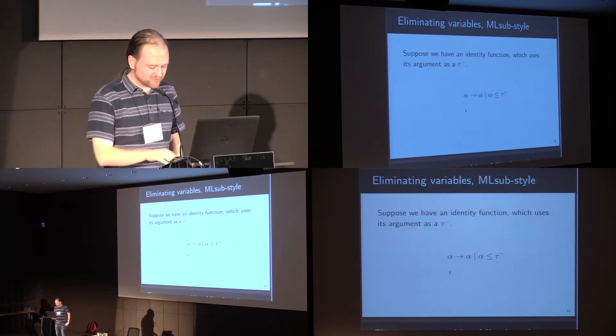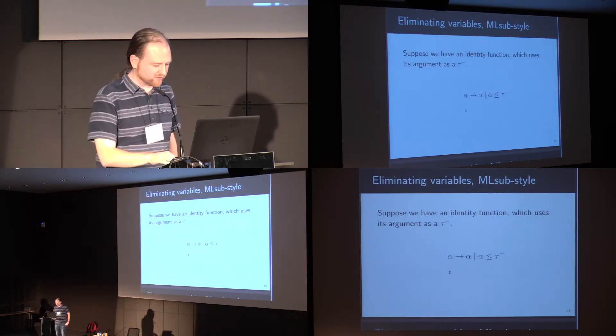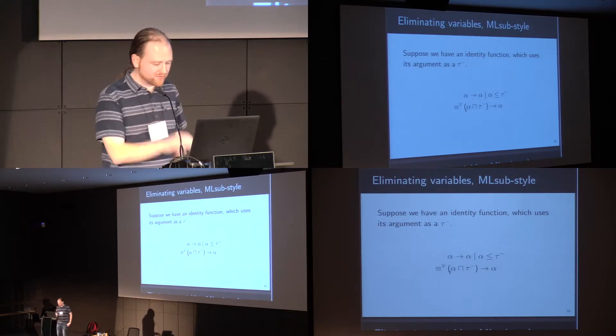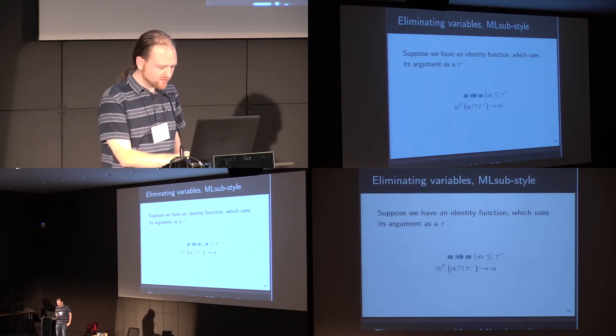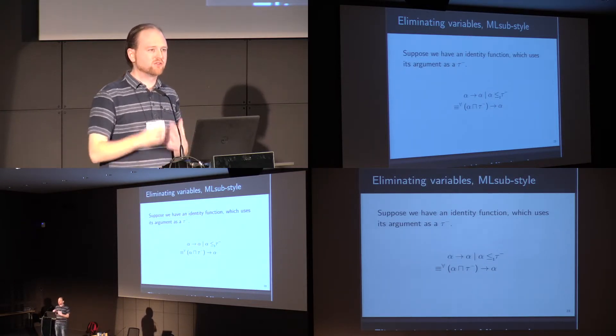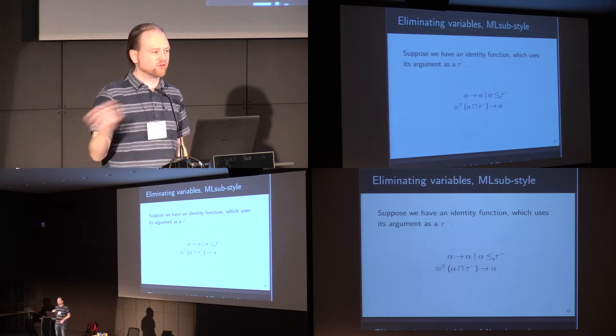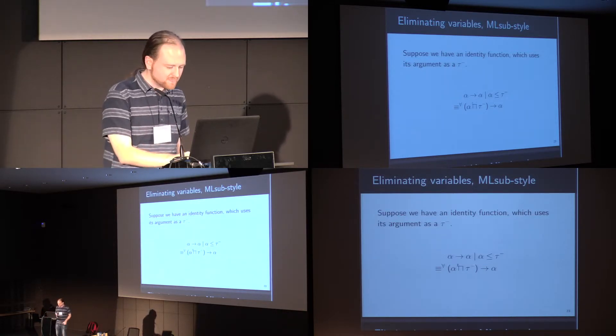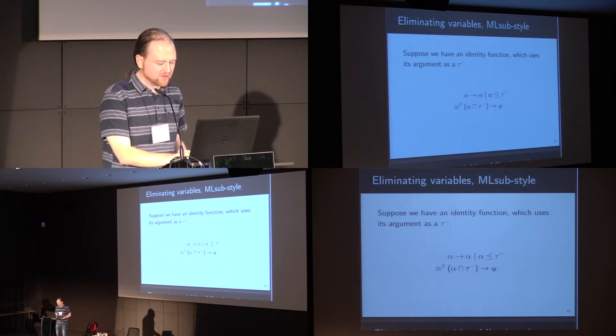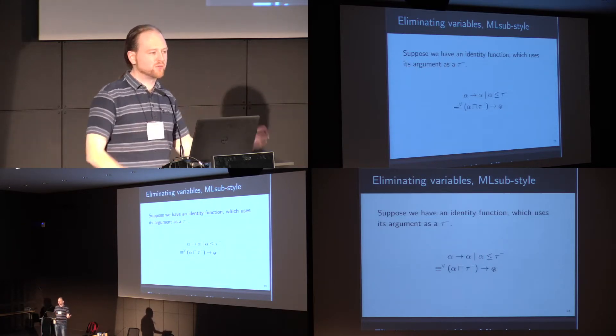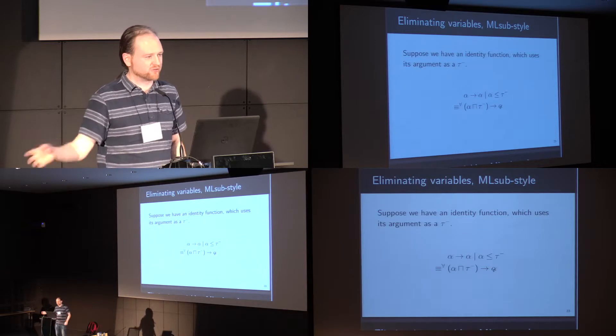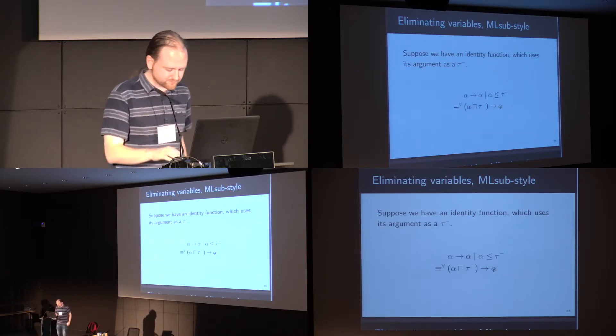However, we do know that the meet of alpha and t-minus is t-minus. So this type is the type of functions which take an input, use it as a t-minus, and then return the input unchanged. It's equivalent to this type, which takes things which are both an alpha and a t-minus, and returns that they're just an alpha.